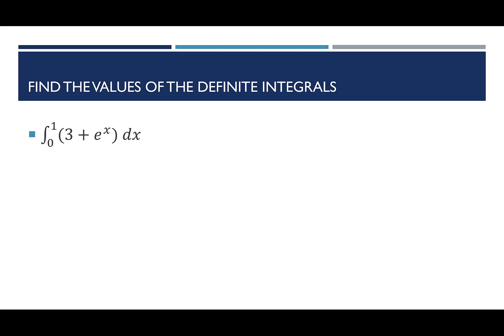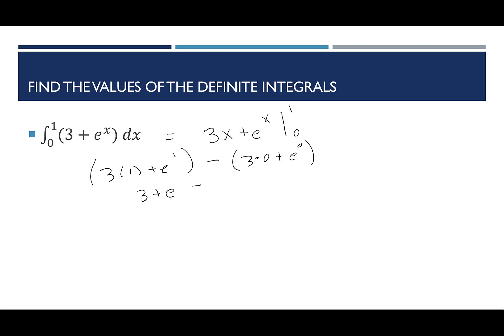This next one: the integral from 0 to 1 of (3 + eˣ) dx. The 3 gets an x, and eˣ stays as eˣ. Plugging in 1: 3(1) + e¹, then minus 3(0) + e⁰. Parentheses help make sure the negative sign pushes through. So: 3 + e minus (0 + 1). That gives 3 minus 1 plus e, which is 2 + e. I'll leave the answer as 2 + e.